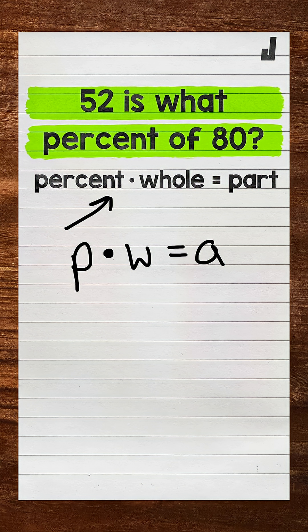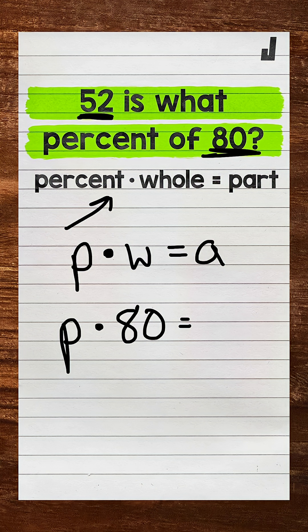Now we can plug in. And we are looking for the percent. That's our unknown. So let's keep that variable of P times the whole, which is 80, equals the part, which is 52.